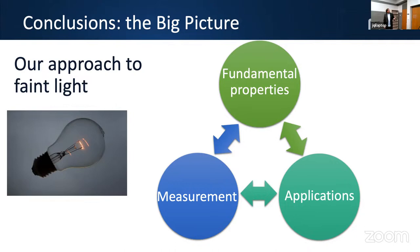In conclusion: faint light is quite interesting in its own right, with interesting fundamental properties. Those fundamental properties pertain also to classical and non-classical emitters. There are opportunities for enhanced measurements compared to classical counterparts, leading to nifty applications — but in the end, looking at applications always brings you back to the fundamental properties.